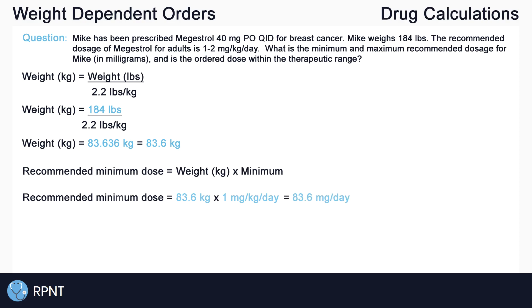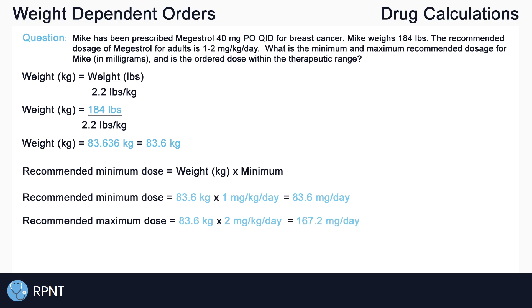We do the same thing for the recommended maximum dose. We multiply our weight, 83.6 kilograms, by the maximum recommended dose of 2 milligrams per kilogram per day, which gives us 167.2 milligrams per day — that is our maximum recommended dose for our patient.